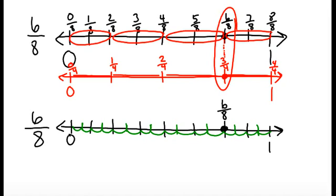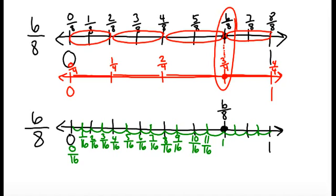So let me label that at 0 sixteenths. And I'm going to label all the way up through my number line. 4 sixteenths, 5 sixteenths, 6 sixteenths, 7, 8, 9, 10, 11, 12, and 16 sixteenths.